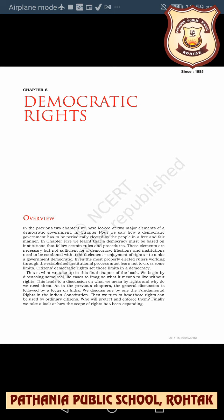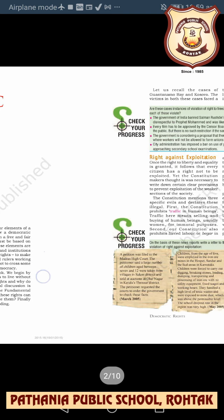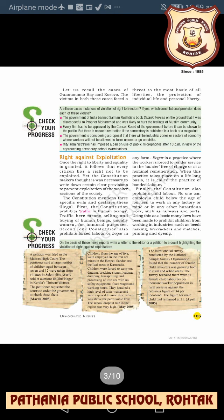Today we will discuss the topic: Right Against Exploitation. Once the right to liberty and equality is granted, it follows that every citizen has a right not to be exploited. Yet the constitution makers thought it was necessary to write down certain clear provisions to prevent exploitation of the weaker sections of society — major guidelines and regulations mentioned in our constitution.